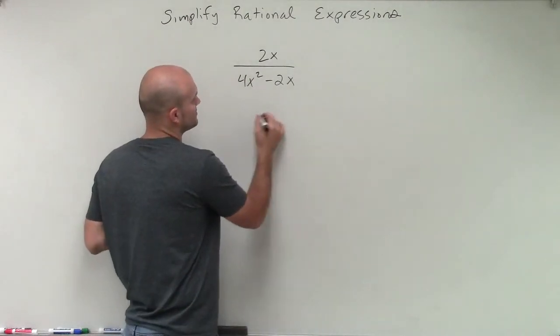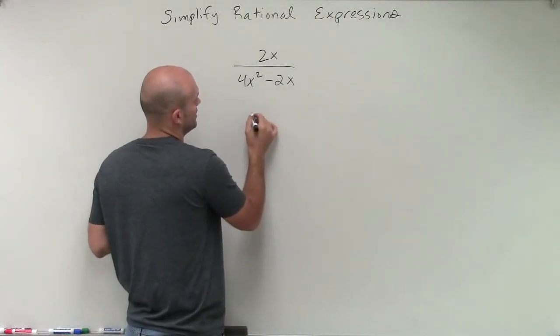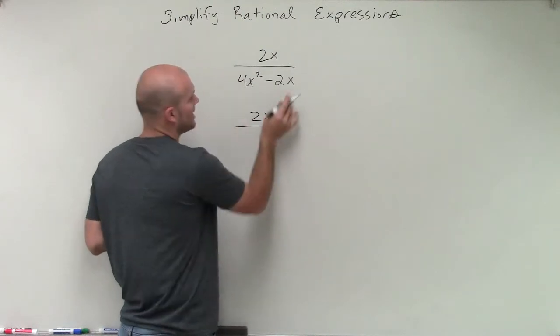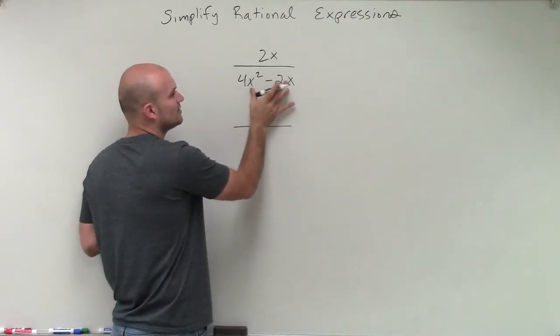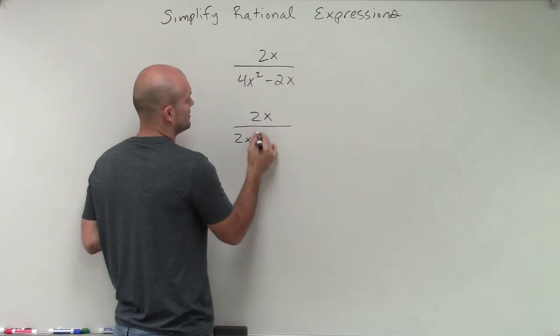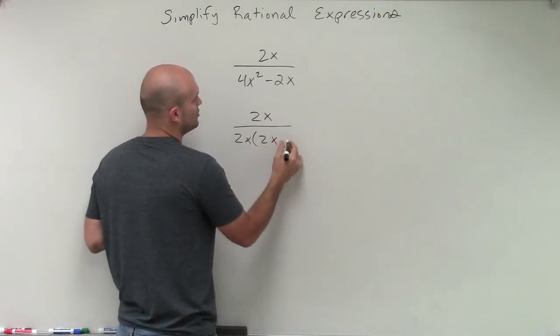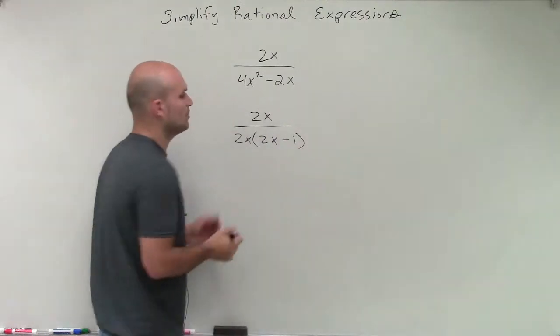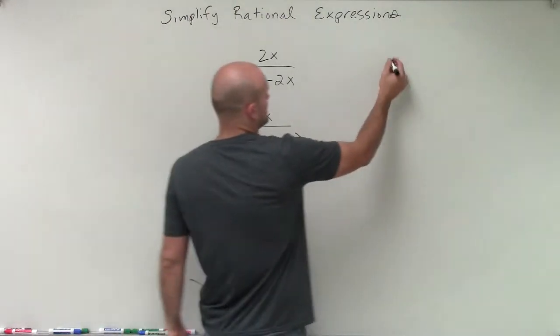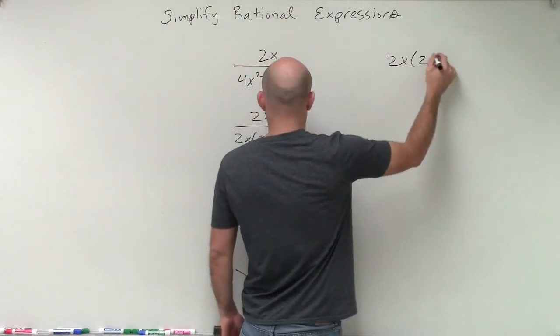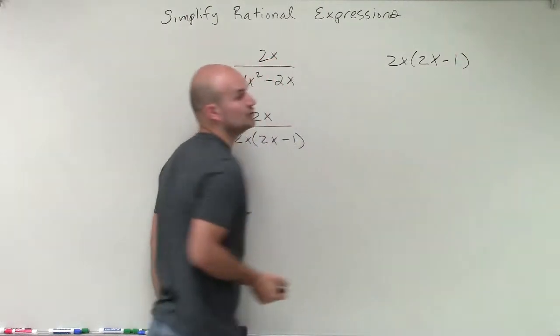So let's just rewrite this. So I have 2x divided by, now you can see that these both share a 2x. And when I factor out a 2x, I'm left with a 2x minus 1. Now if you want to check your answer, you can always go back and apply distributive property to make sure that you did it correctly.